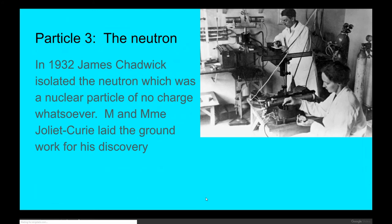The third particle discovered, James Chadwick, isolated the neutron in 1932, which was a nuclear particle of no charge whatsoever. Monsieur and Madame Joliette Curie laid the groundwork for the discovery, and they paid the price with their lives from playing with radiation. The neutron has no bearing in chemistry, but it's an important particle to learn for some other reasons.